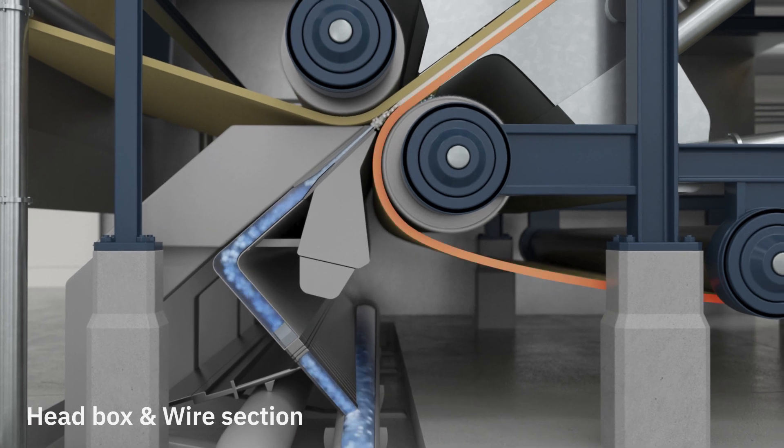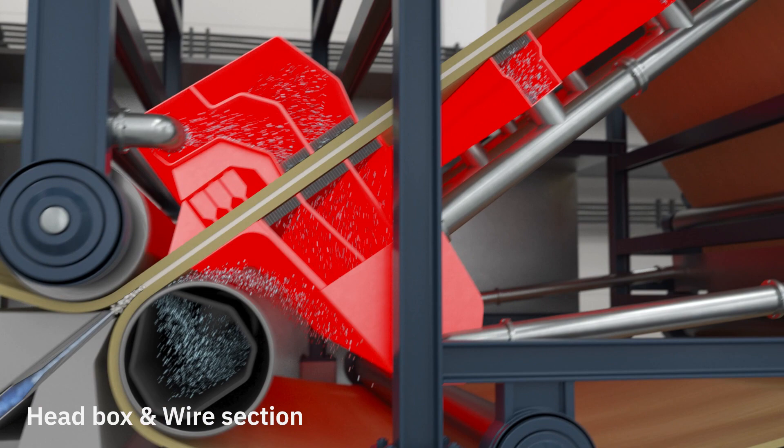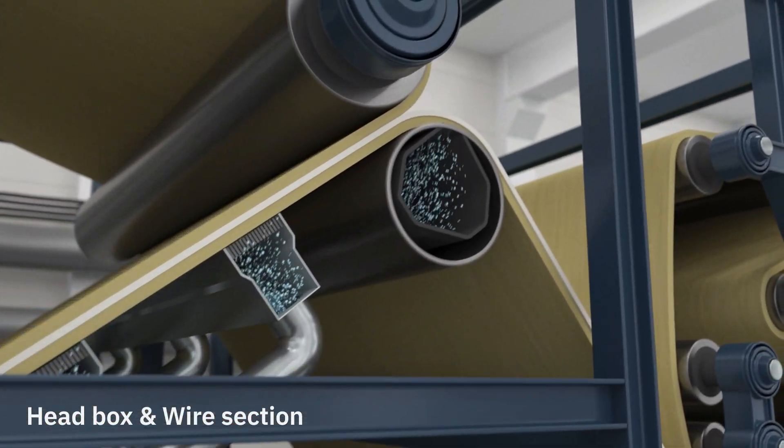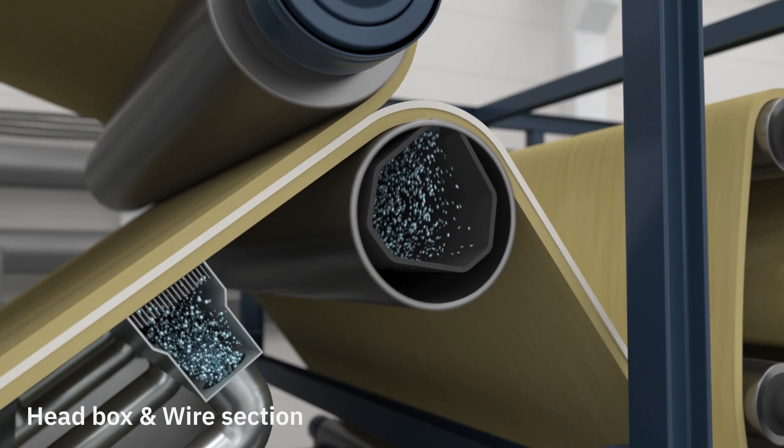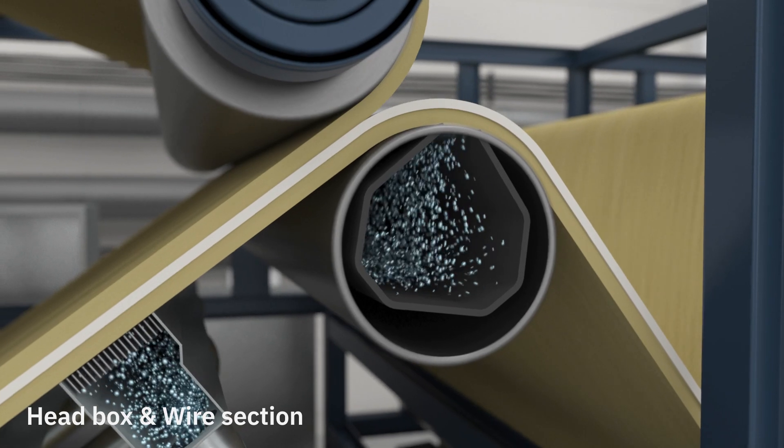The wire section consists of a bottom wire and a top wire, and there are multiple suction boxes which help to reduce the water from the pulp. The fibers stay on the surface of the fabrics while the water is drained through. About 3,300 tonnes of water is removed every hour.